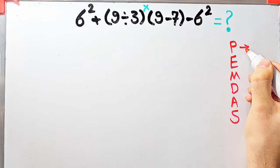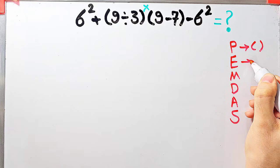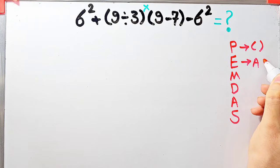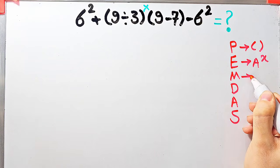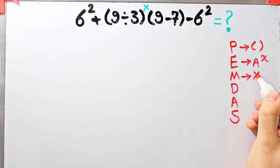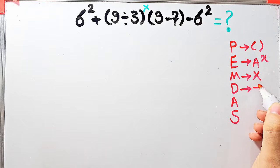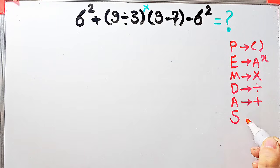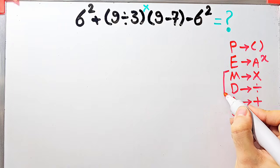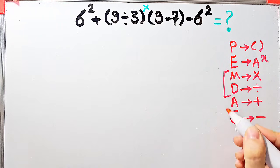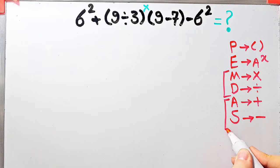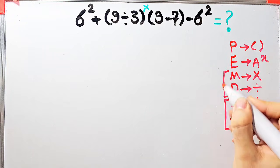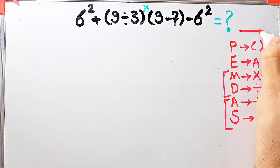In this rule: P stands for Parentheses, E stands for Exponent, M stands for Multiplication, D stands for Division, A stands for Addition, and S stands for Subtraction. Multiplication and division have the same level of priority, and when we have both in an expression we start from the left and simplify.